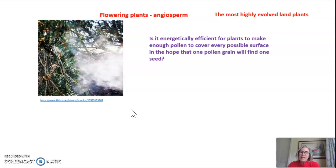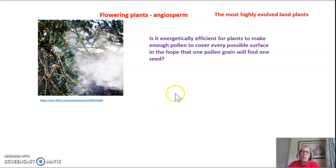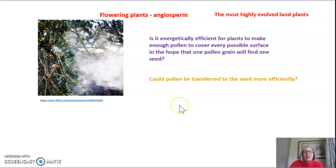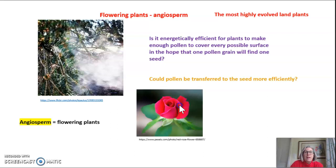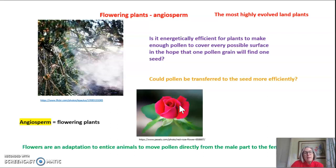Do you think it's energetically efficient for a plant to make enough pollen to cover every possible surface in the hope that one pollen grain will find one female gamete? Could pollen be transferred to the seed more efficiently? That's where the angiosperms come in — the flowering plants. Flowers are actually an adaptation by plants to entice animals to move pollen directly from the male part to the female part.